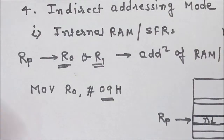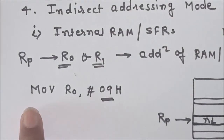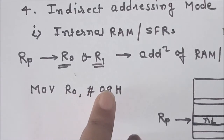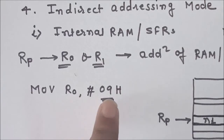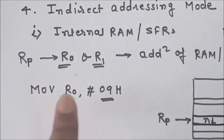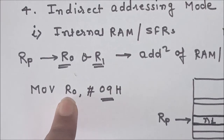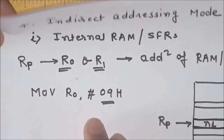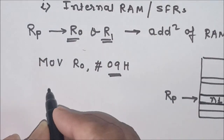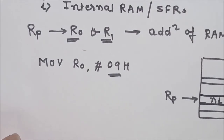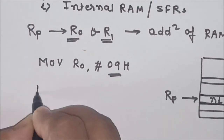Now, 09H we want to use as an address, but in this instruction we are storing 09H in R0, so it is actually data at this point, and we have to use the hash sign. So here, first we are using immediate addressing mode to store 09H in R0. Now this address is stored in R0, and we can use indirect addressing mode.